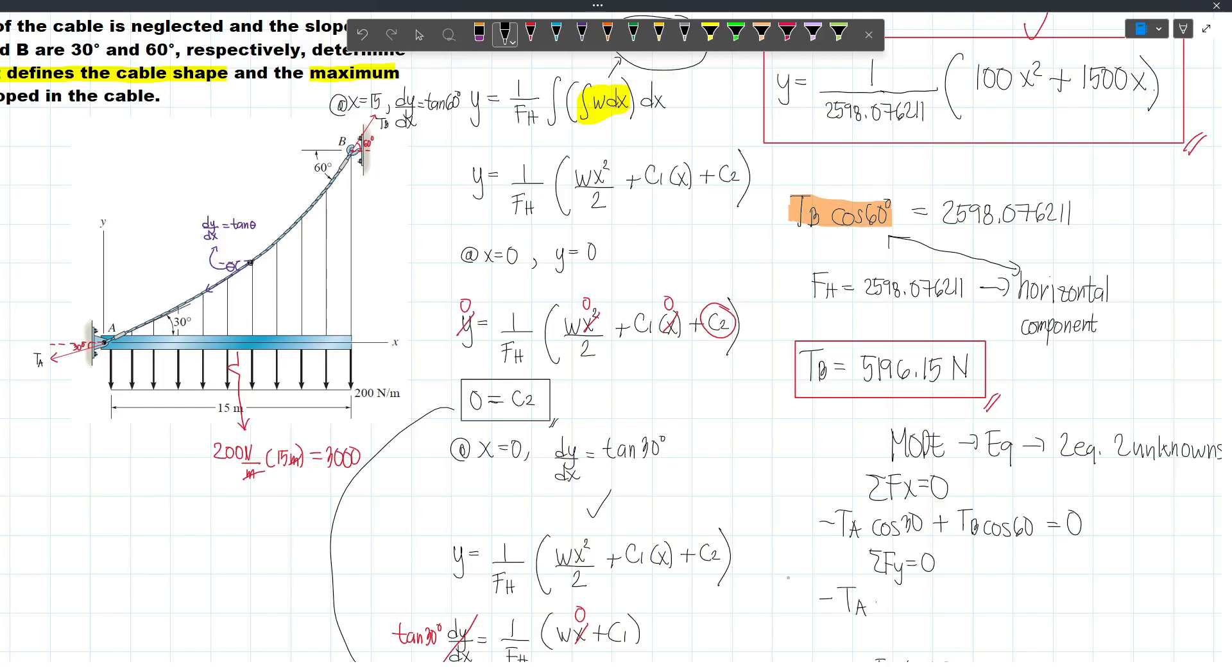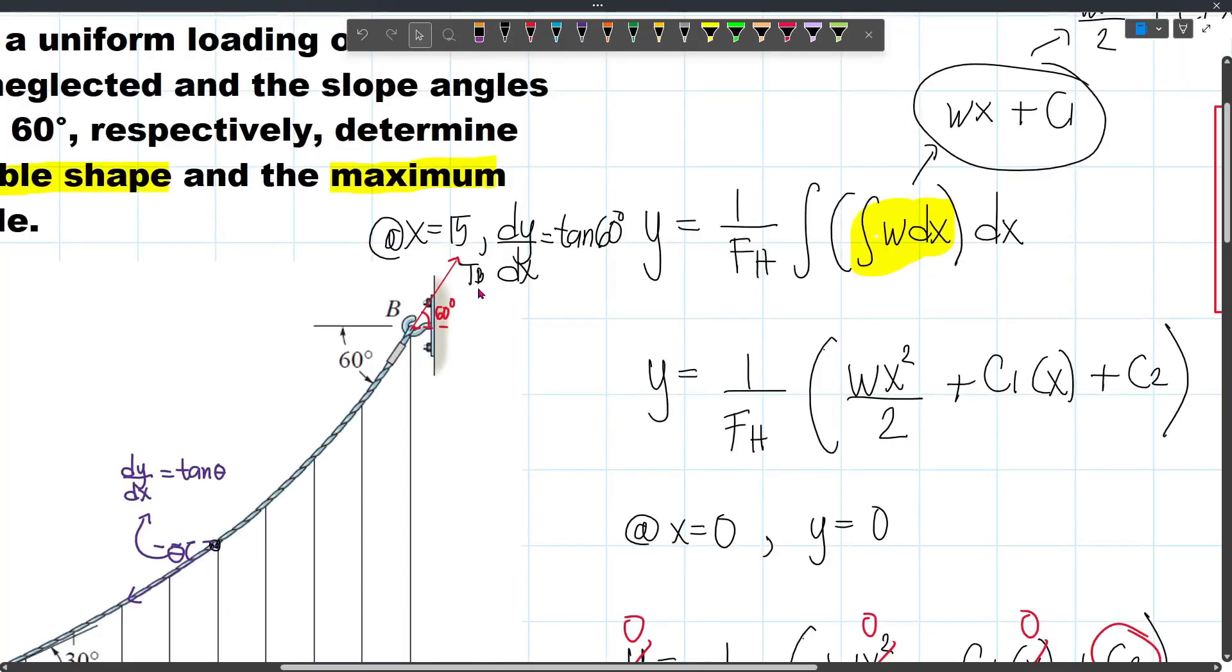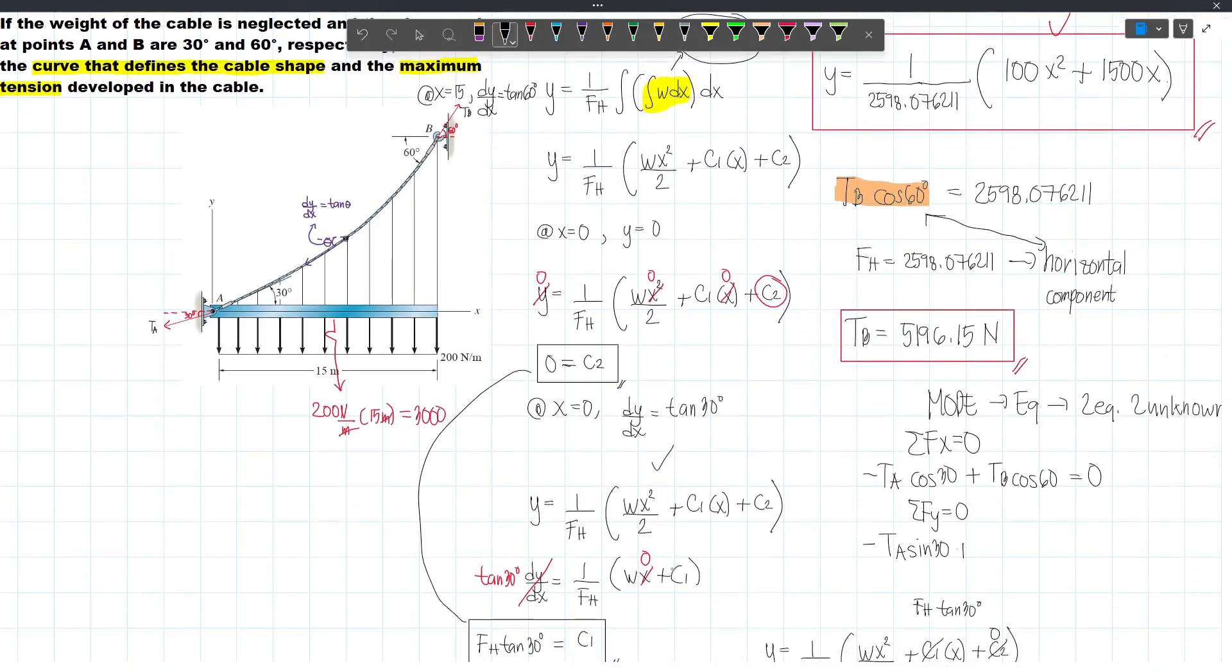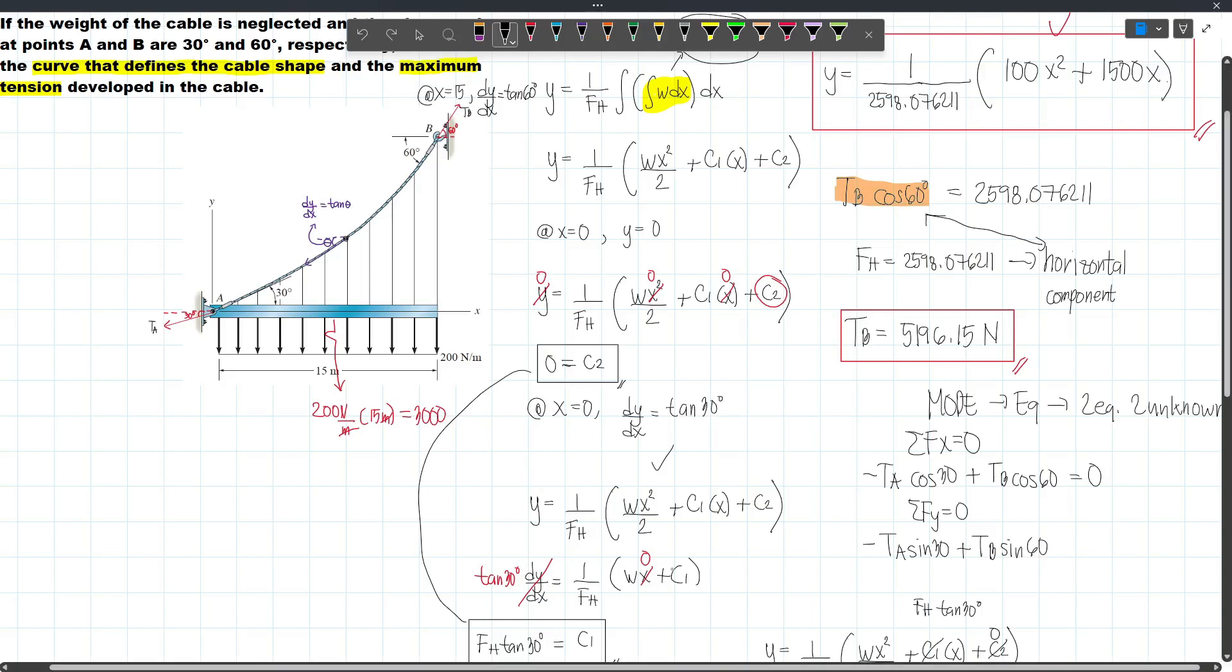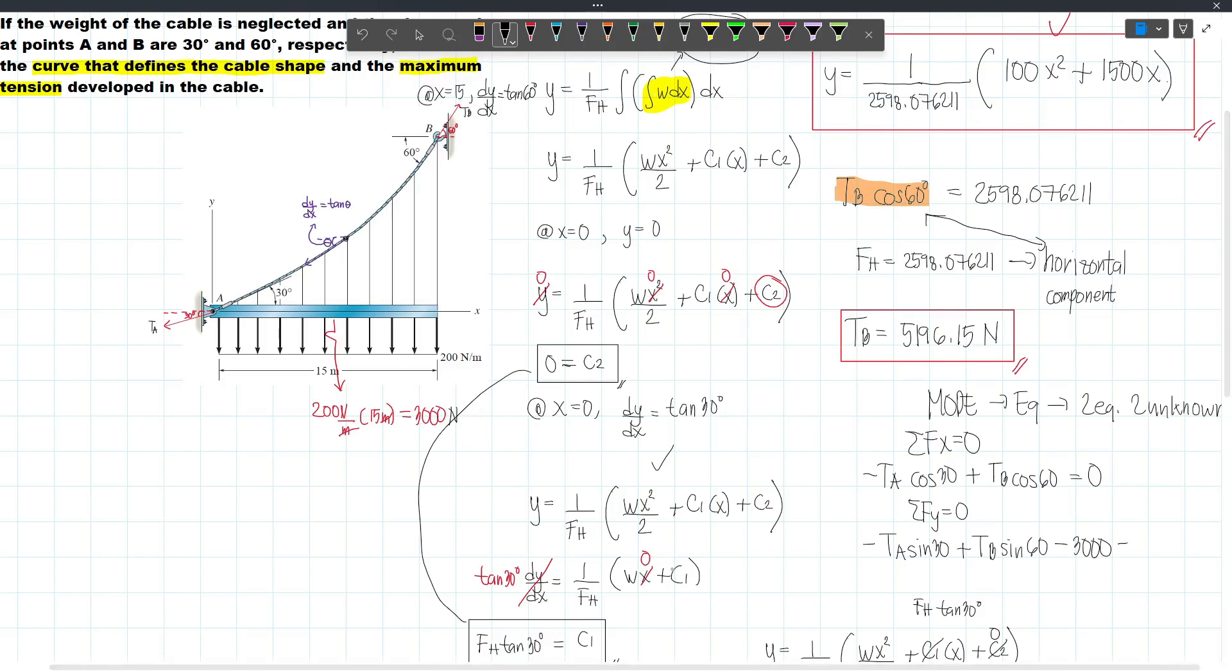Negative TA sin 30, and then plus the vertical component of TB, which is TB sin 60. So this will be plus TB sin 60. And then we have this resultant force, which is acting downward. So this will be minus 3000. And then we will set this one to zero.